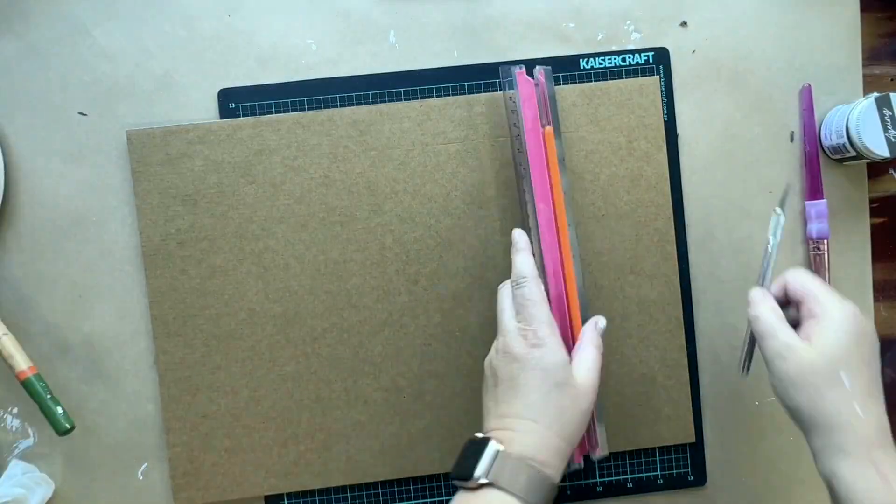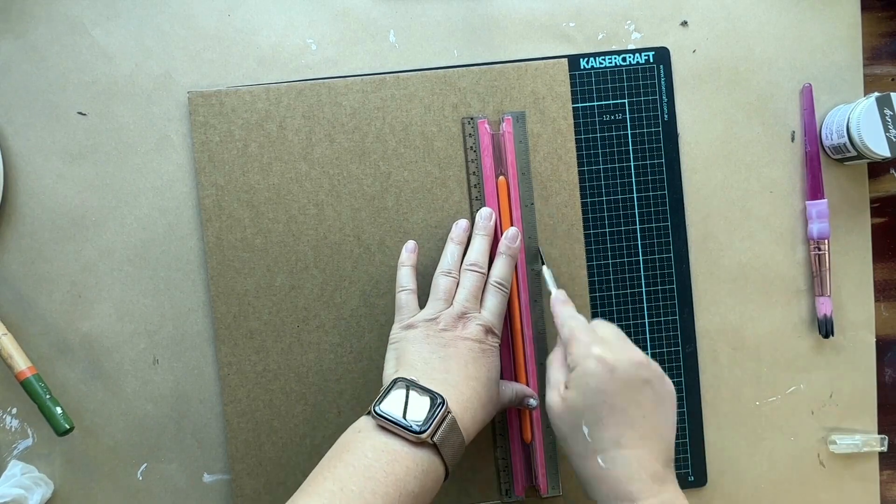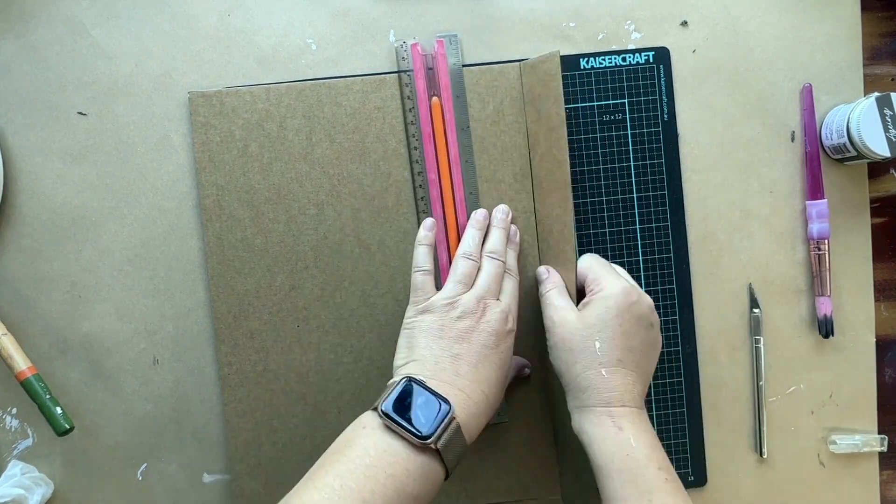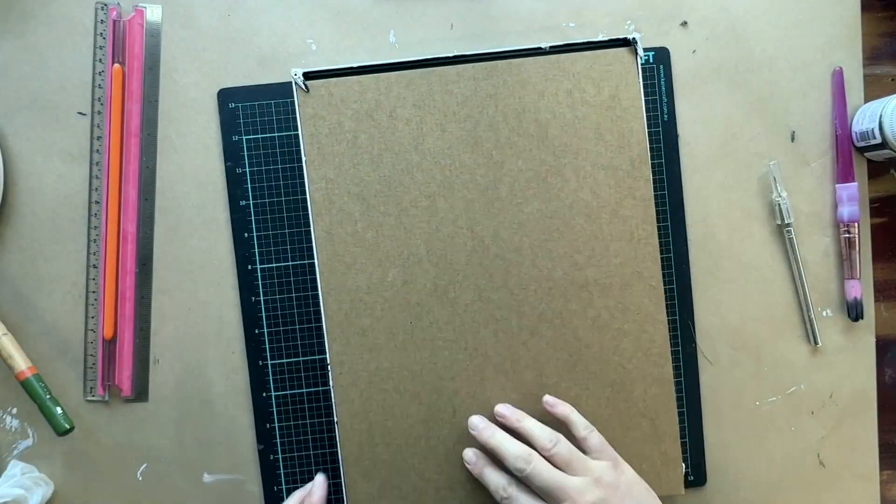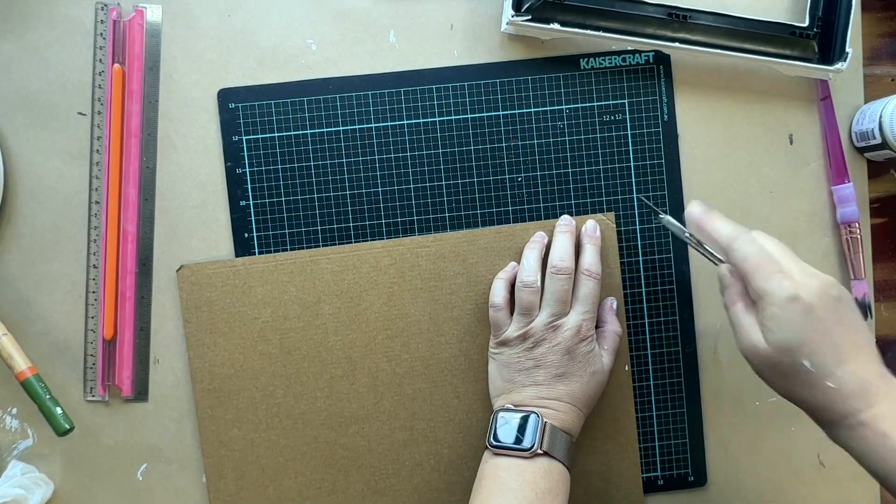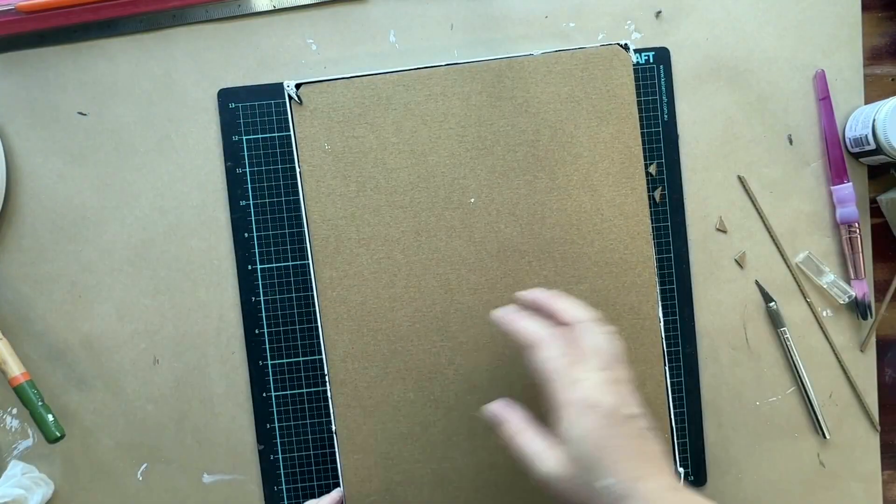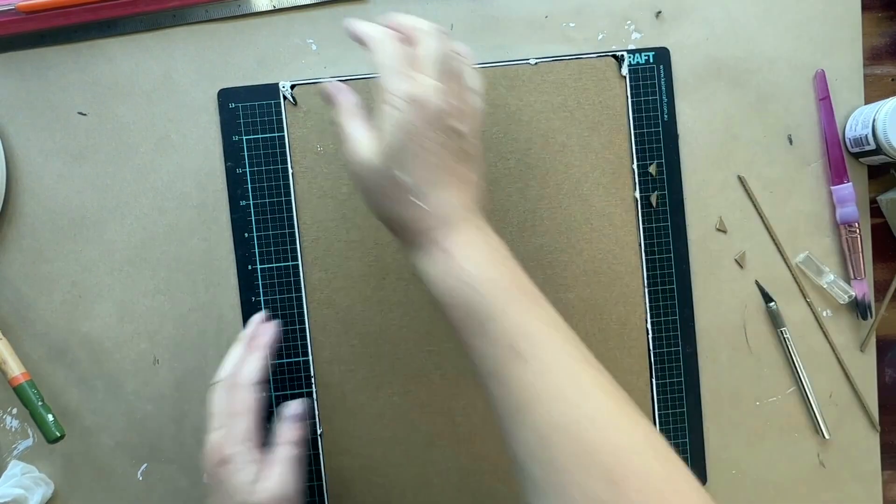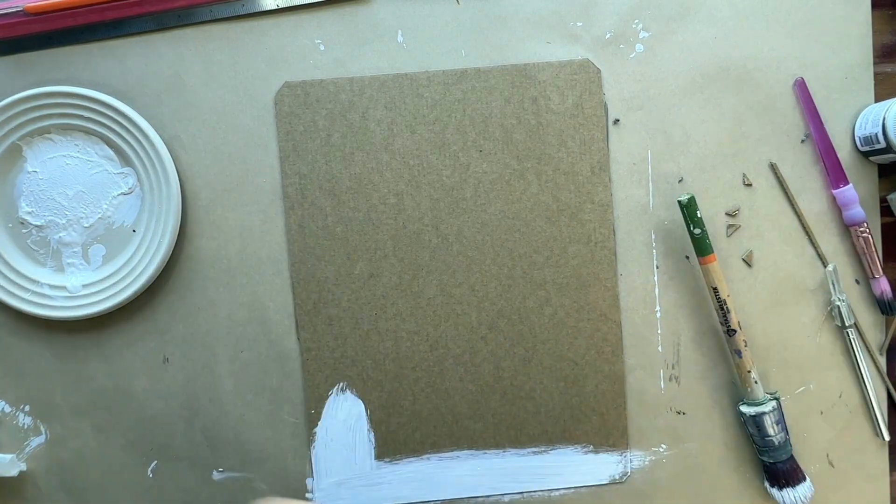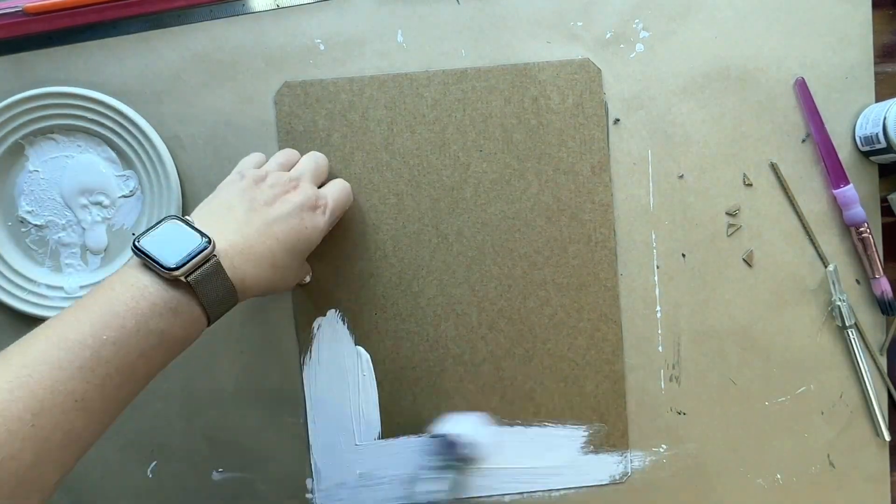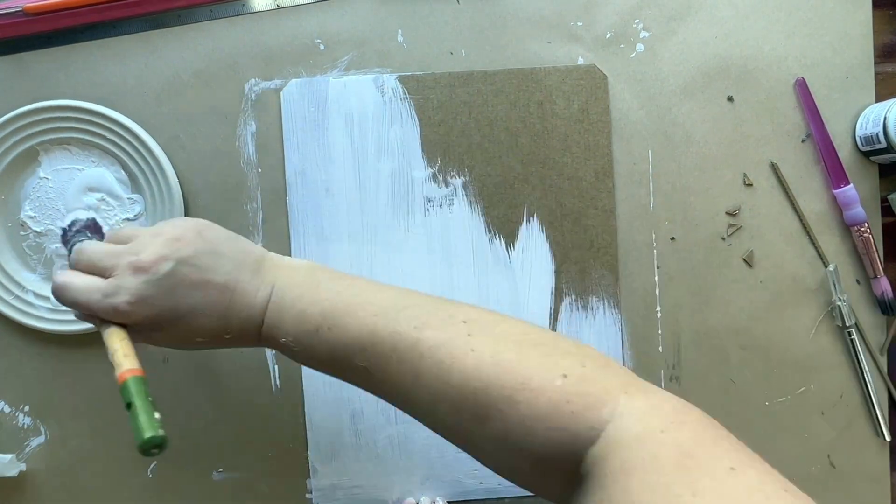I'm just measuring and cutting out a new backing board for the frame using cardboard. After checking that it fits, I'm just painting it with some Victorian Lace. Once it's dry, I will apply a second coat.